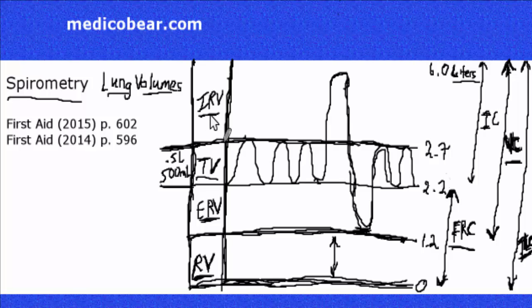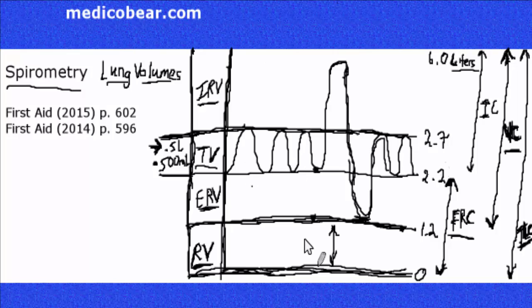A way of thinking of the IRV is the air that can be breathed in after normal inspiration. Tidal volume, just the air that moves into lungs with each quiet inspiration, typically about 500 milliliters or 0.5 liters. Expiratory reserve volume, air that can still be breathed out after normal expiration. And RV, that basically is just air in lung after maximal expiration.